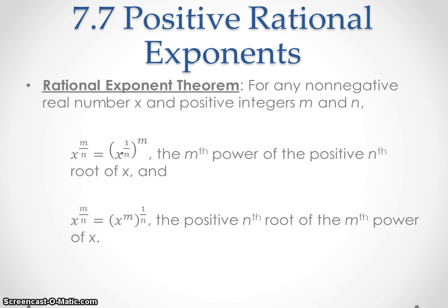If you remember our exponent rules, if you take a power to a power, you multiply them. In that case we'd have m over 1 as a fraction, and if we multiply those fractions we'd get 1 times m — which is m — over n times 1, which is n, giving us m over n for our power. That's what we started with, so we're breaking it back apart. If you have it written as x to the m/n, you can break it down and write it this way.